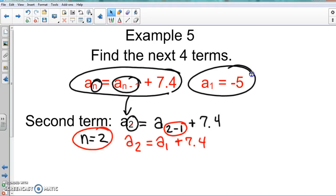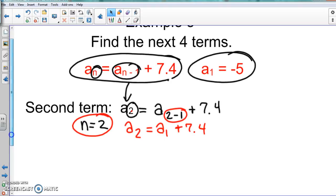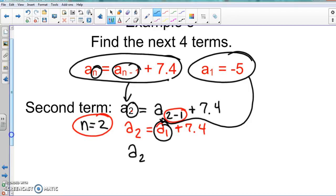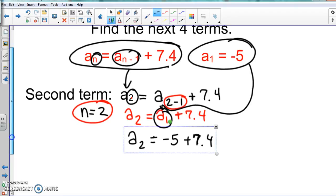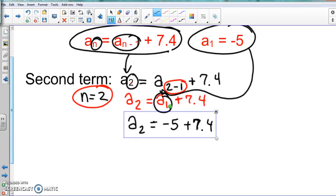So we have a₂ equals a₁ plus 7.4. And does everybody again see where we got the 2 from? We said that n was equal to 2 because that's what this number is right there. So n is equal to 2. Now, most people are going to be like, oh my gosh, that's not it, we're not done. There's so much work. So we do have more work to do.